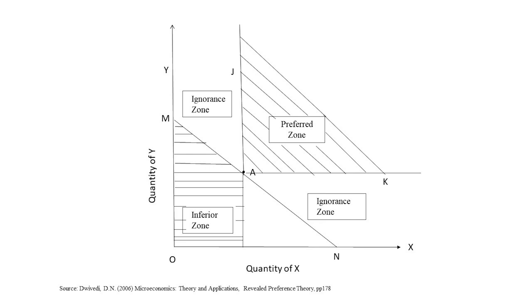The area above the line MN is broadly divided into three zones: JAK, JAM, and KAN. The area JAK is the preferred area because any point on JAK shows a larger quantity of Y with the quantity of X remaining the same. Similarly, any point on the line AK shows a larger quantity of X with the quantity of Y remaining the same. An area to the right of AJ and above AK shows a basket having a combination of more of both goods. Therefore, any point on the lines AJ and AK, and even between them, is preferable to A, and this area is marked as the preferred zone.